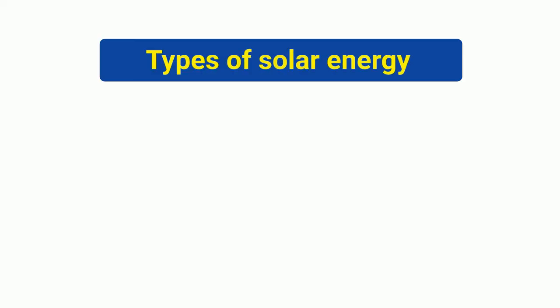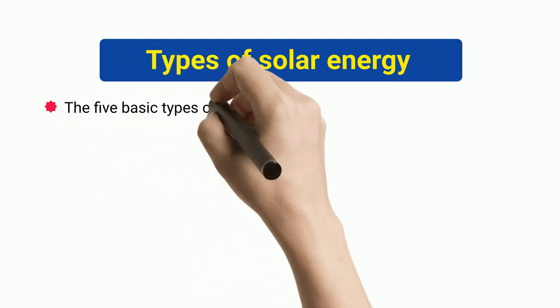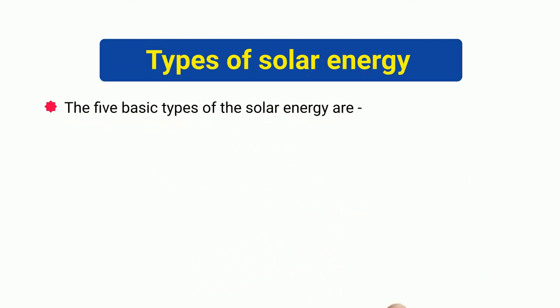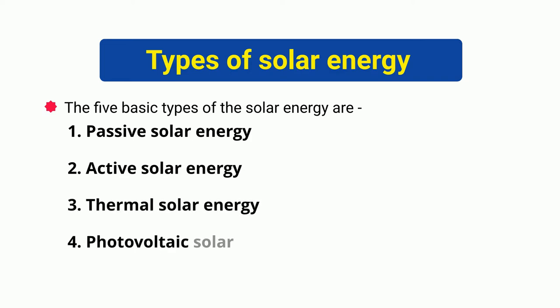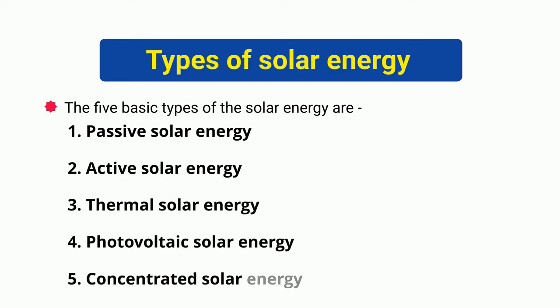Types of Solar Energy. The 5 basic types of solar energy are: passive solar energy, active solar energy, thermal solar energy, photovoltaic solar energy, and concentrated solar energy.